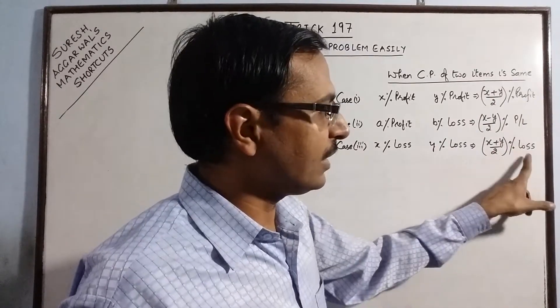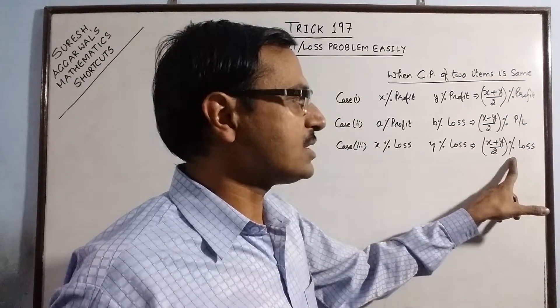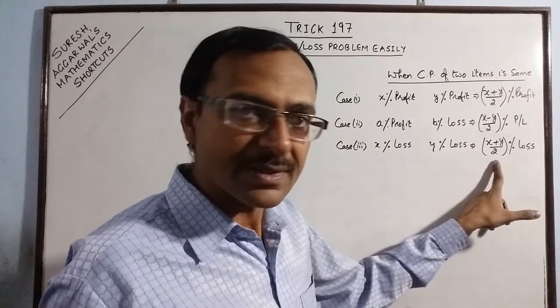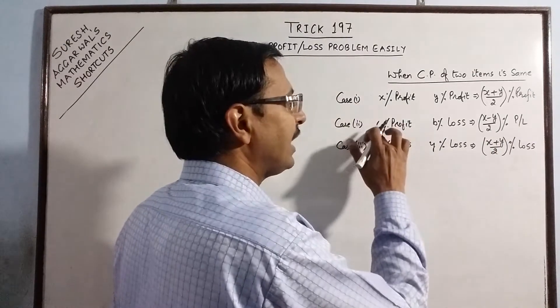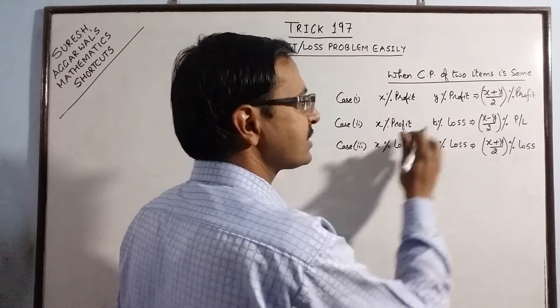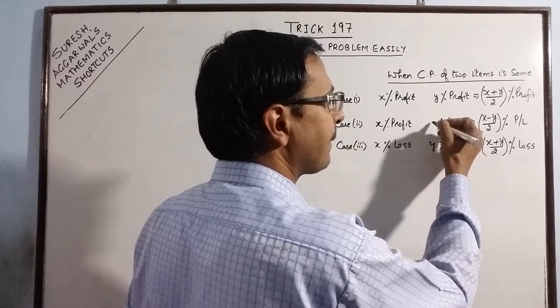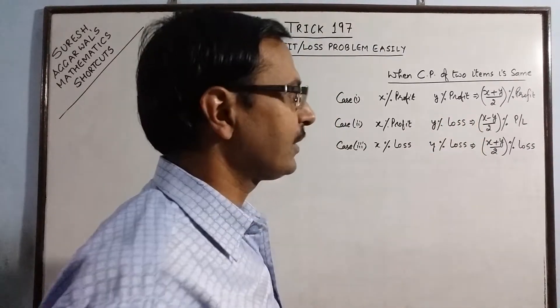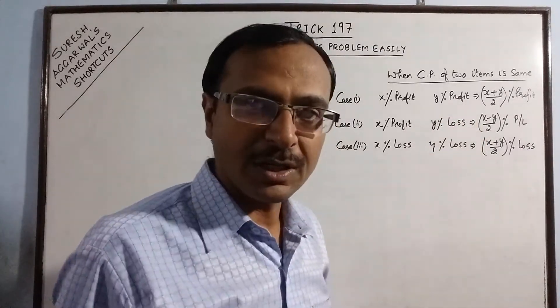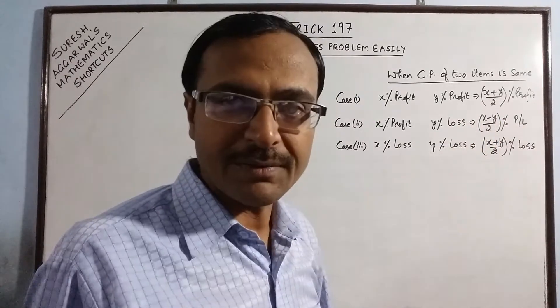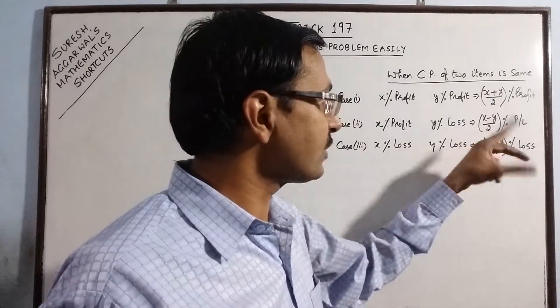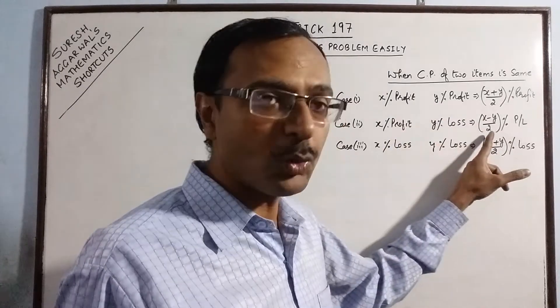Only thing is the net percentage loss will be calculated in such cases. But in the third case, when we have profit on the first and loss on the second or vice versa, then we just need to substitute this positive sign with negative sign. So the difference of the two percentages divided by 2 will give you the net profit or loss percent.